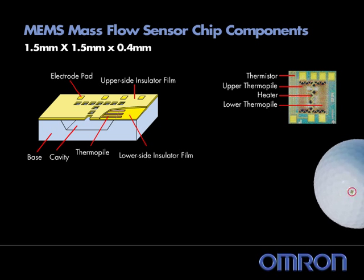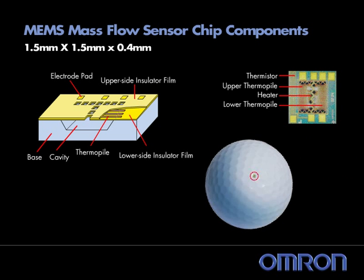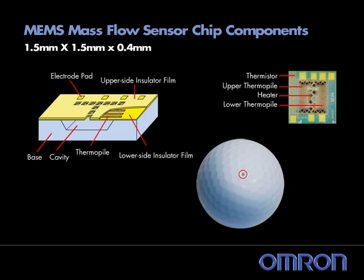The cross-sectional view of the OMRON MEMS Flow Chip shows its unique inverted cavity shape, which allows for greater sensitivity due to the increased surface area relative to the cavity volume.